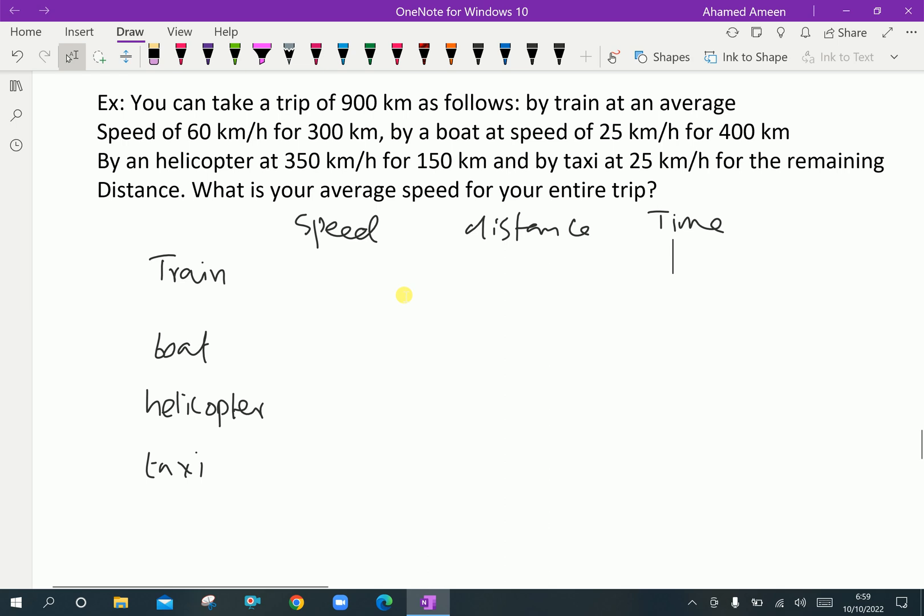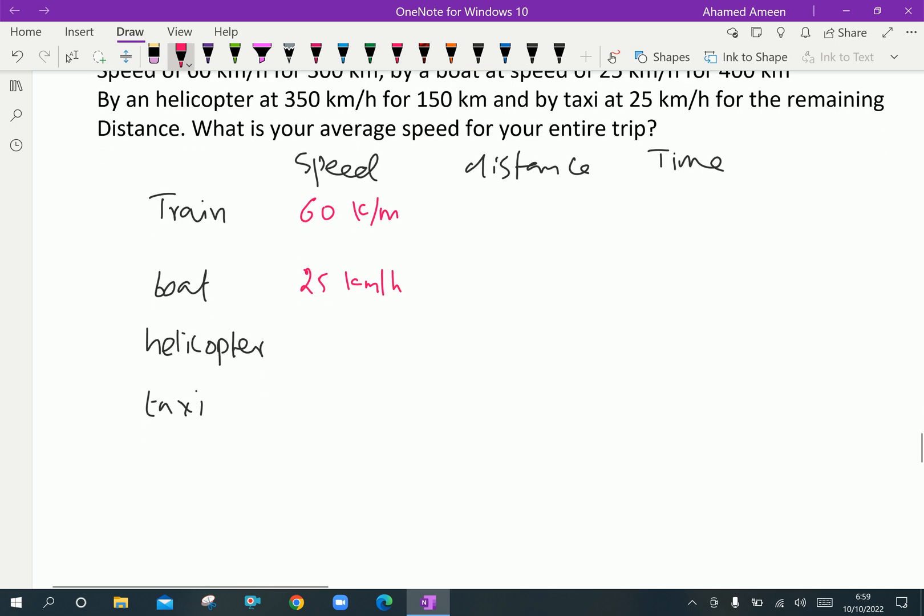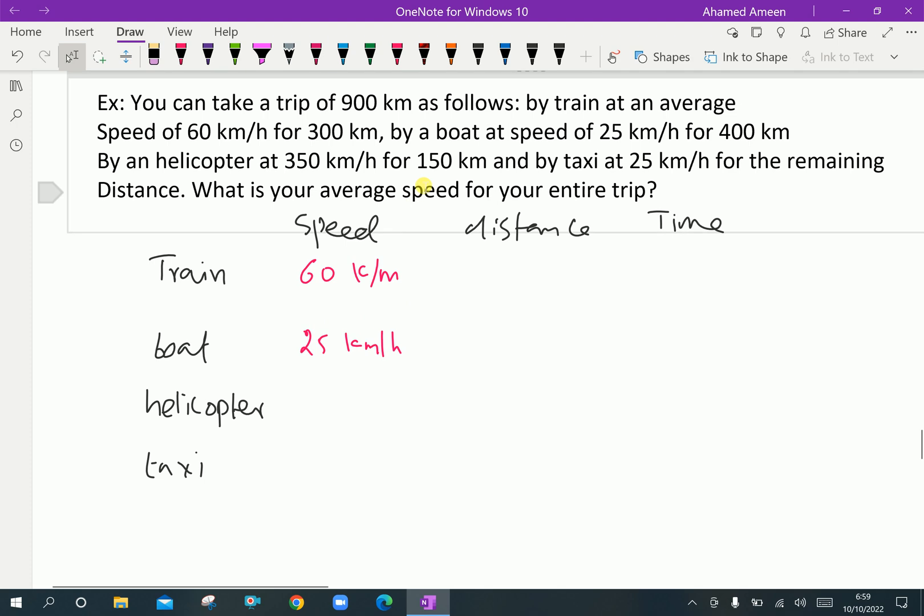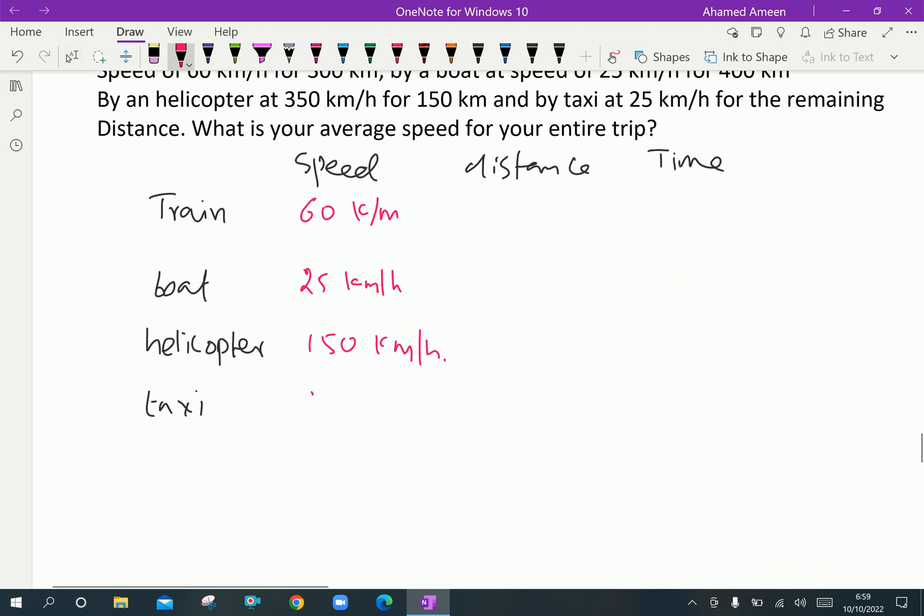Here, first, we have to put speed. First train speed is 60 kilometer per hour. This boat is 25 kilometer per hour. Helicopter is 150 kilometer per hour and 25 kilometer per hour for taxi. These are the speeds.